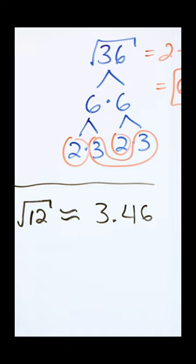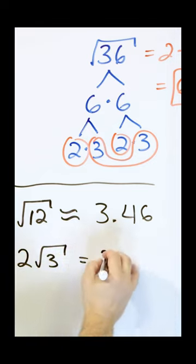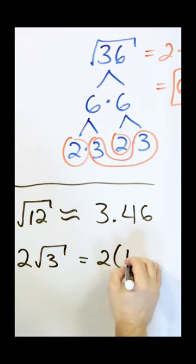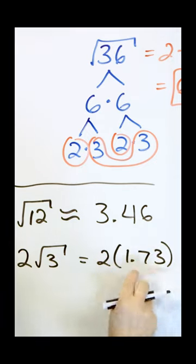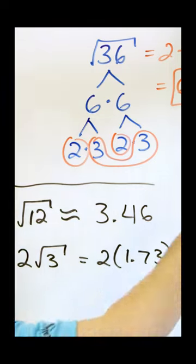If you take two and multiply it by the square root of three, and put the square root of three in a calculator, you'll find that it comes out to 1.73. It's not really 1.73, it's 1.73 with an infinite number of decimals. I'm rounding everything to two decimal points here.